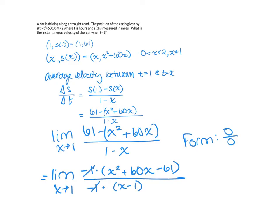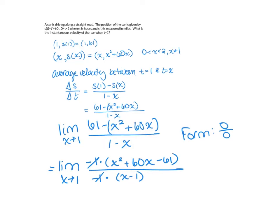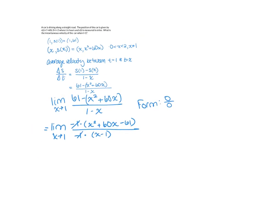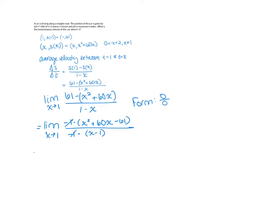and we can factor the top. So we get limit as x goes to 1 of x minus 1 times x plus 61, divided by x minus 1.